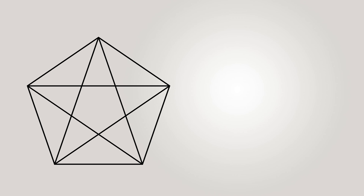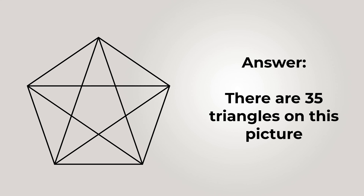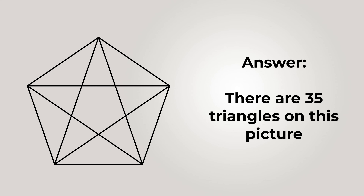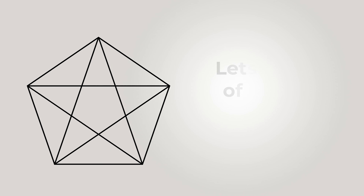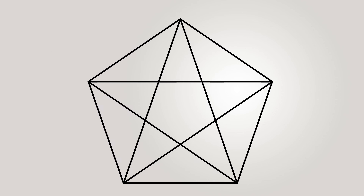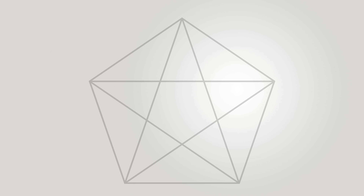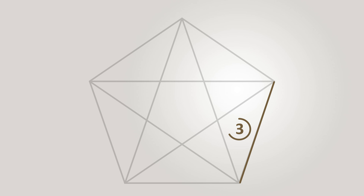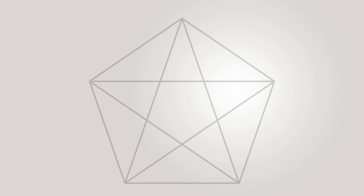It is mind-boggling, but there are 35 triangles in this picture. That was certainly a huge surprise. Let me draw all of them for you. I'll start with the 10 small border triangles, then identify groups of medium and larger triangles in successive sets.